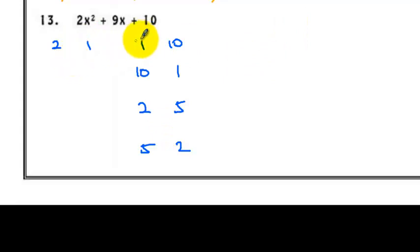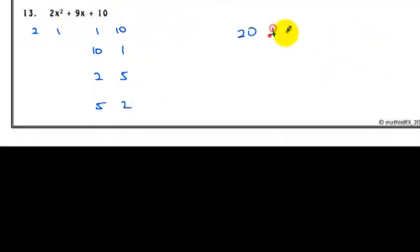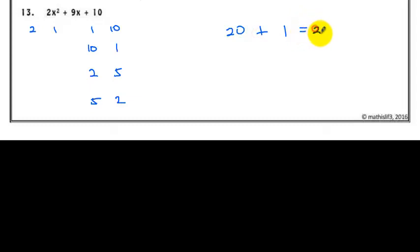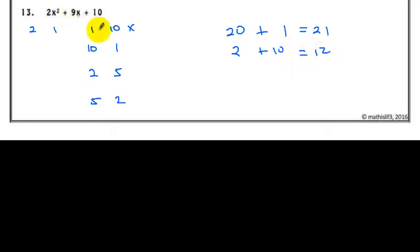Let's try (2, 1) with (1, 10): outer 2 times 10 is 20, inner 1 times 1 is 1, sum is 21 — not correct. Try (2, 1) with (10, 1): outer 2 times 1 is 2, inner 1 times 10 is 10, sum is 12 — we need 9, so not correct. Try (2, 1) with (2, 5): 2 times 5 is 10, 1 times 2 is 2, sum is 12 — not correct.